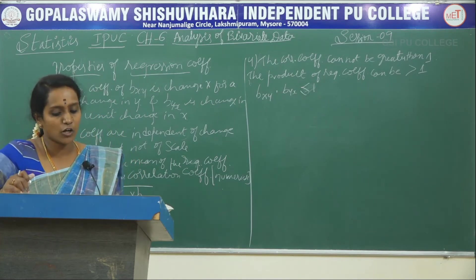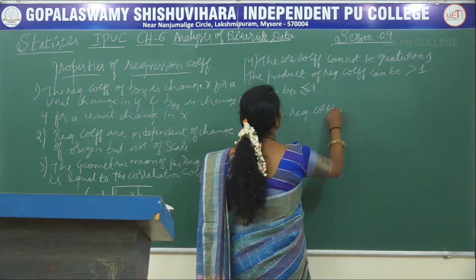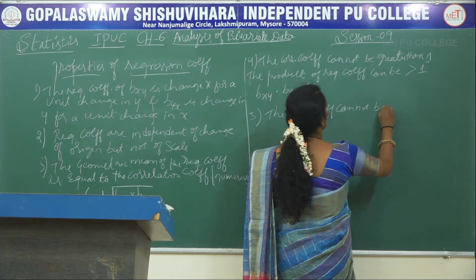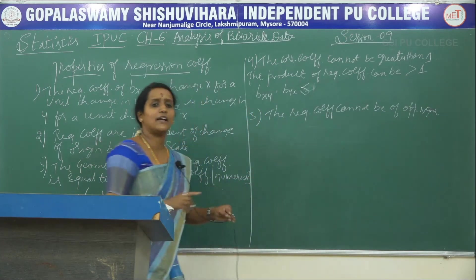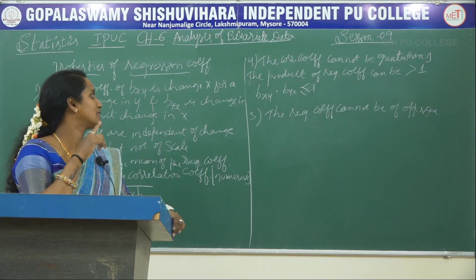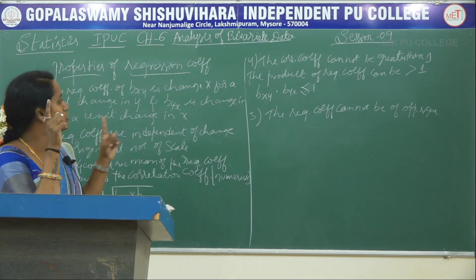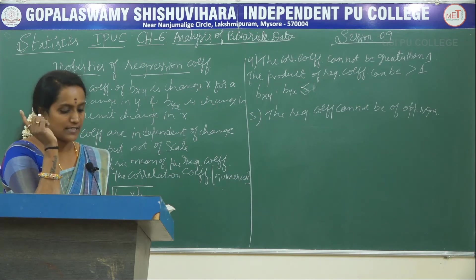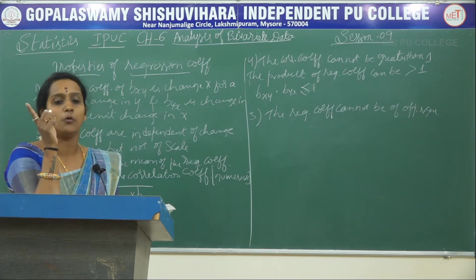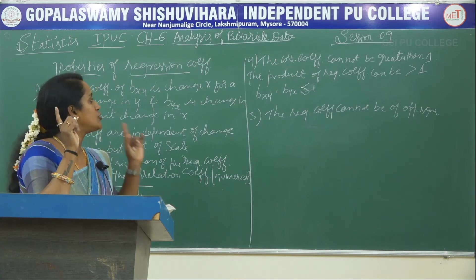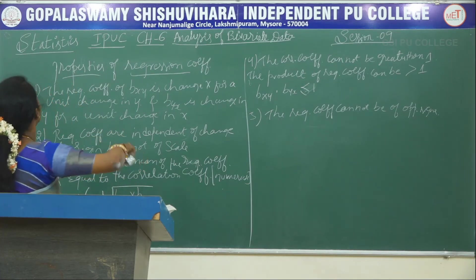Fifth property: the two regression coefficients cannot be of opposite sign. If bXY is negative, then bYX should also be negative. Both should have the same sign — both positive, both negative, or both zero. These are the five important properties of regression coefficients.